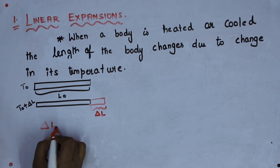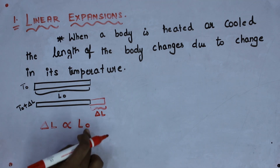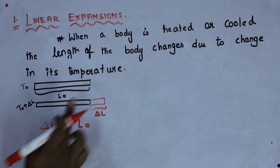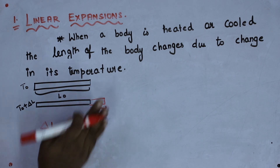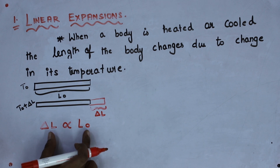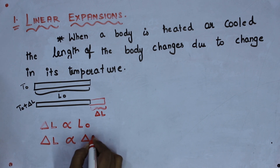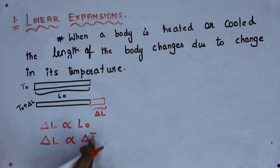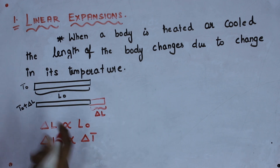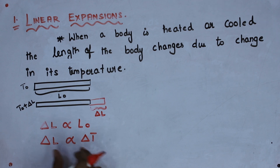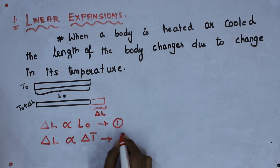Delta L is the change in length. It is proportional to the original length of the solid — if the initial length is more, the linear expansion is more; if the initial length is less, the linear expansion will be less. The linear expansion is also proportional to the change in temperature — if the temperature is more, the linear expansion will be more, and if temperature is less, the linear expansion will be less. Both are proportional to each other.